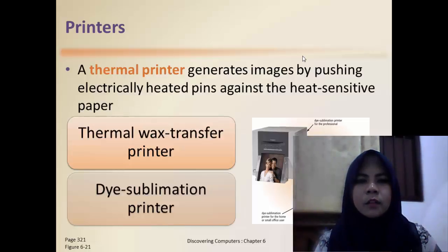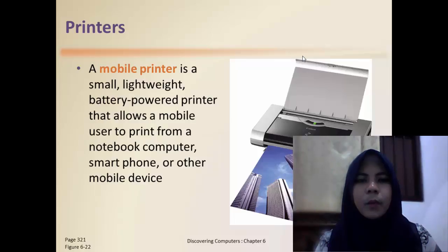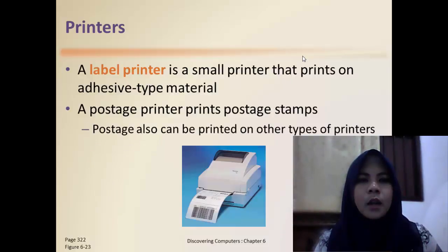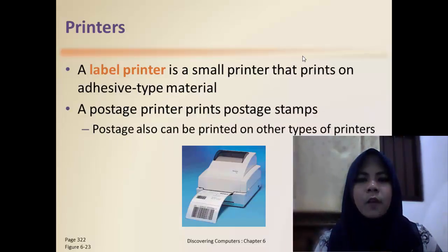A thermal printer produces an image by pushing alternately heated pins against heat-sensitive paper. A mobile printer is a small, battery-powered printer that allows a mobile user to print from a netbook, computer, smartphone, or other mobile device. A label printer is a small printer that prints on adhesive label material.